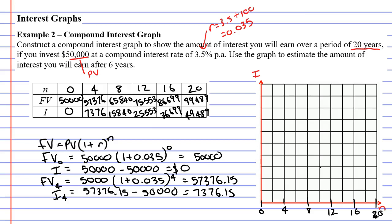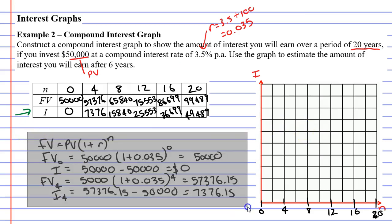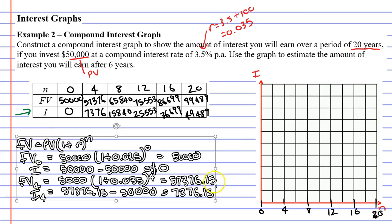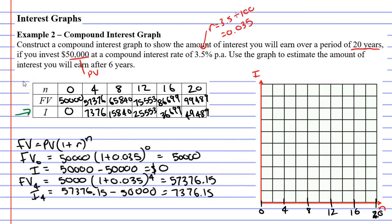We're graphing interest. This row goes almost as high as $50,000. I think we'll go up two squares and go 10,000 each time: 10k, 20k, 30k, 40k, and finally 50k. That worked out really well. That's a good scale I've picked there.